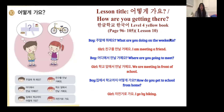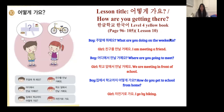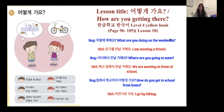Today's lesson title is 어떻게 가요? — How are you getting there? This lesson can be seen in your yellow book on page 96. If you don't have the book, it's okay — just look at the screen. I always put the page on the screen so you can follow along. Just make sure you have some kind of notebook or piece of paper to write down your notes. Let's get started.